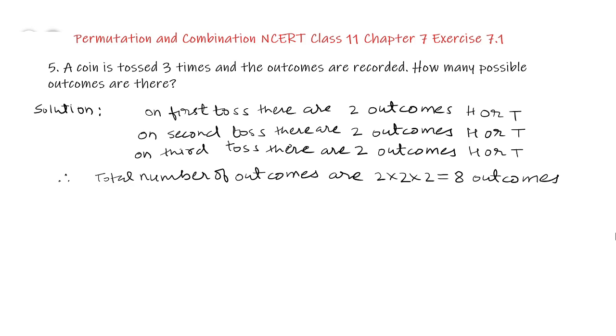principle of multiplication, total number of outcomes are 2 multiplied by 2 multiplied by 2 equal to 8 outcomes which we can list also.